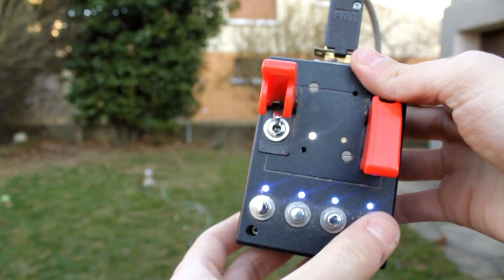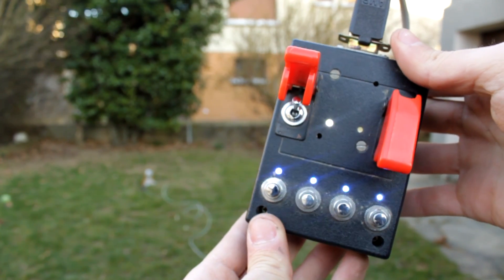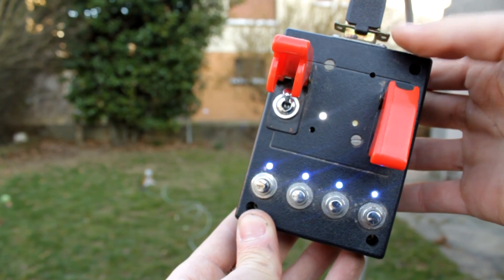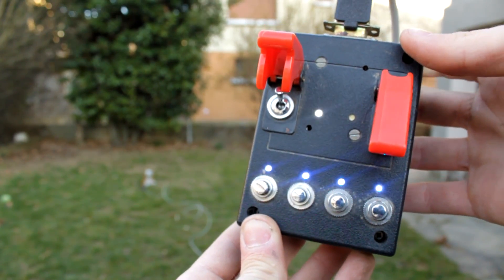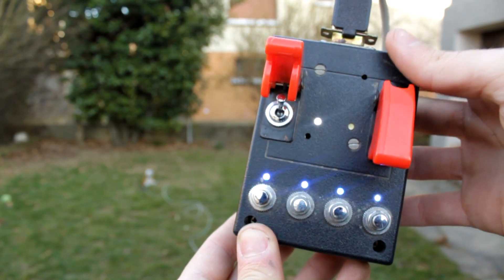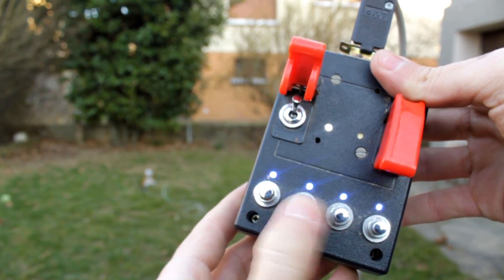These blue LEDs indicate if there's a good continuity between the firing system and the electric match. If there's no continuity, of course, the LED just stays off. It's still on safe mode though, so nothing happens if I hit these push buttons.